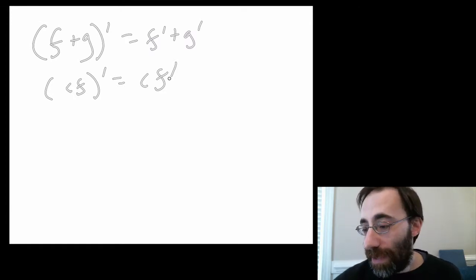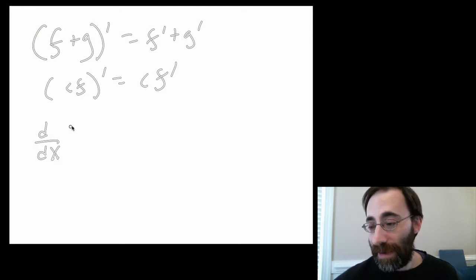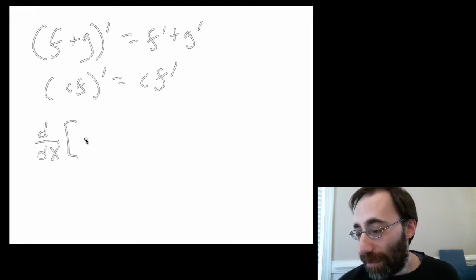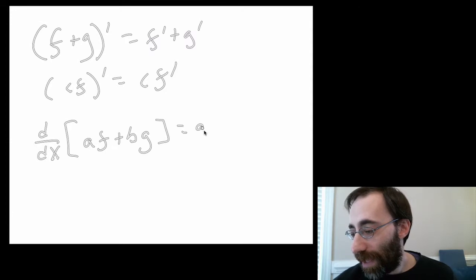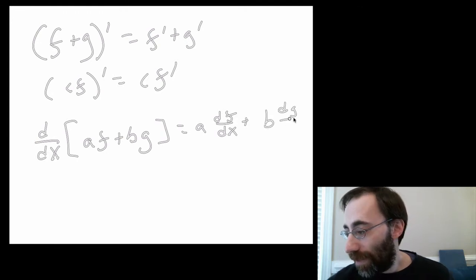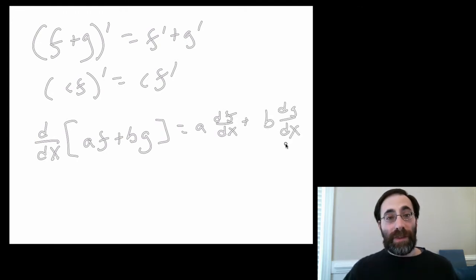Those are the two parts of it. You can put them together if you want to, and show that, and I'll use the d by dx notation instead, if you have a constant a and a function f, plus a constant b times a function g, this thing is equal to a df over dx plus b dg over dx. And there you go.